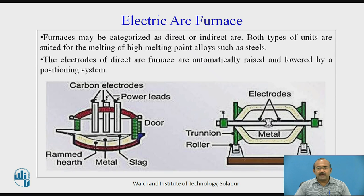Furnaces may be categorized as direct or indirect type, as shown in the figure. Both types are suited for melting high melting point alloys such as steels. In the direct arc type, electrodes are automatically raised and lowered by a positioning system, and an arc is developed between the tip of the electrode and the metal. In the indirect type, an arc is developed between two distinct electrode tips.